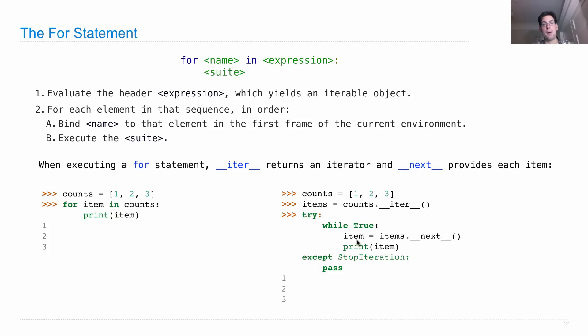So here's the part where we're binding the name item to the next value in the first frame of the current environment. And here's where we're executing the suite of the for statement.